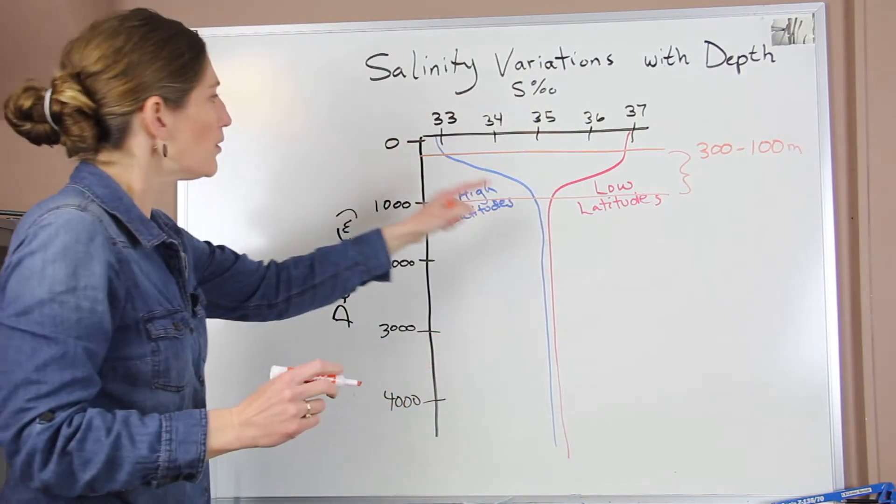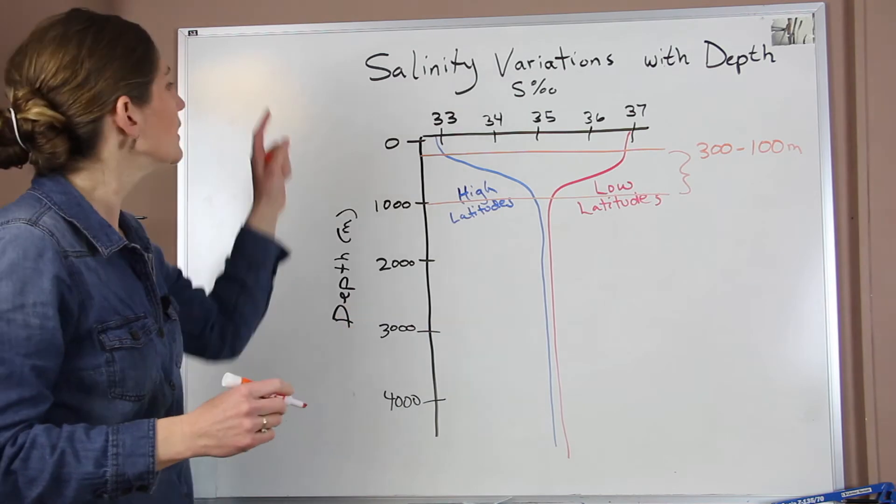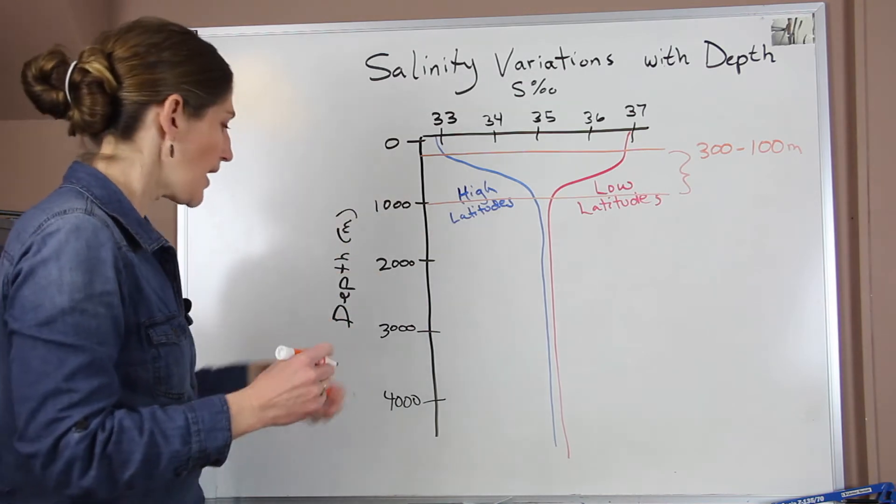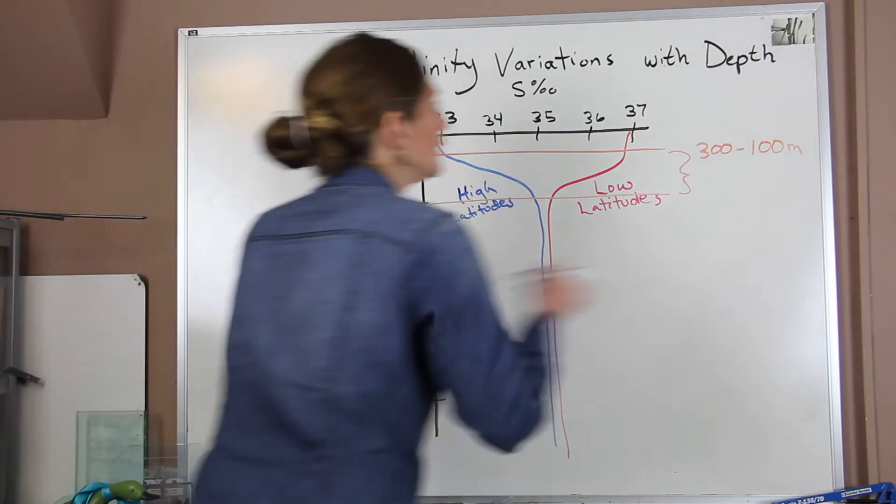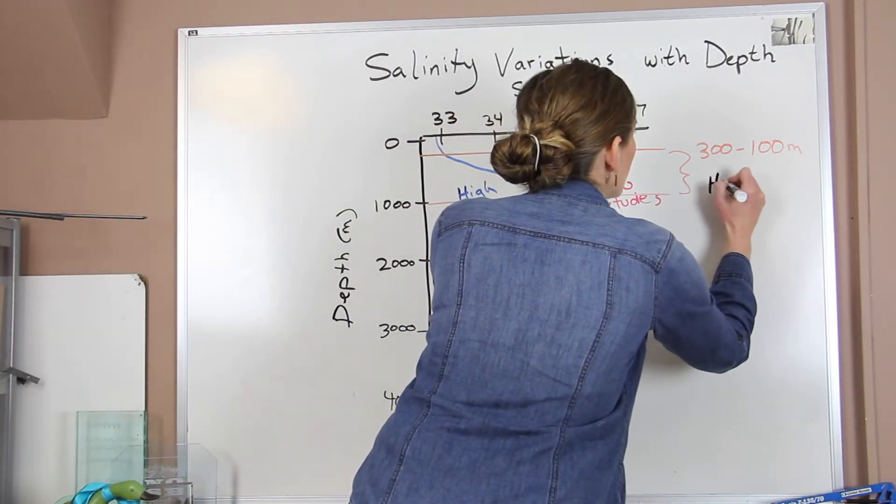we see this zone where we have a change in salinity with depth. And this is the location of our halocline. I'm going to write this in a darker color. So this is the halocline.